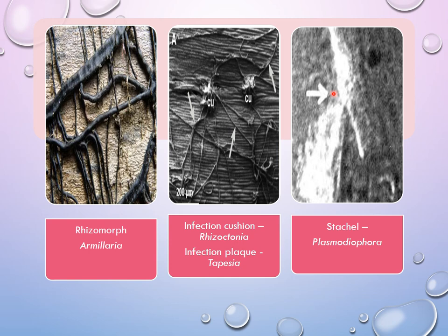These are the different methods of penetration. When the organism has to enter inside, it can enter through artificial openings like wounds and lesions, through natural openings like stomata, lenticels, and hydathodes, or it can directly penetrate by applying mechanical pressure through various fungal hyphal modifications, or it can produce enzymes to dissolve the walls of the host. These are the different steps under host recognition and entry of pathogens. Thank you.